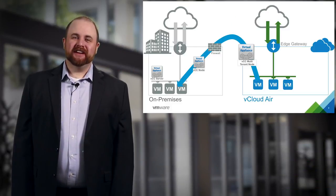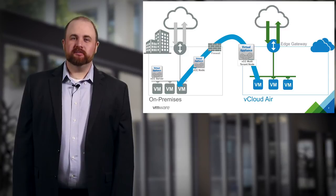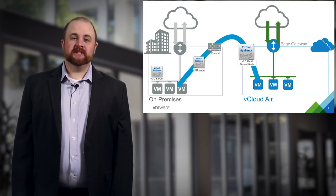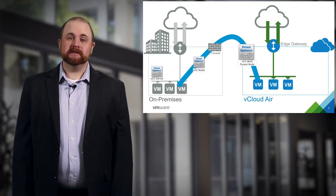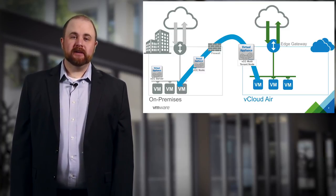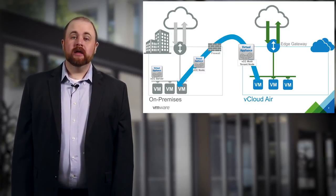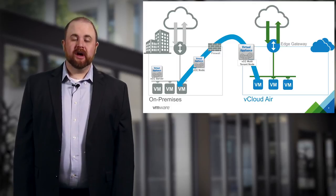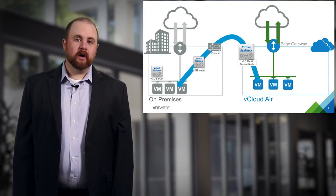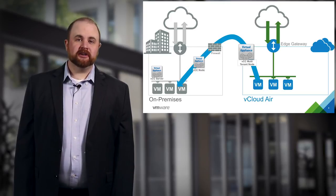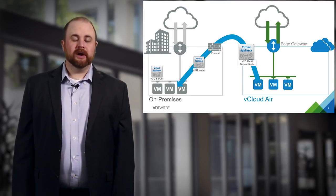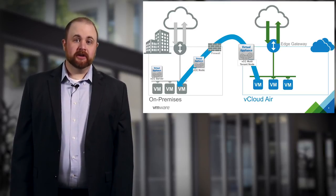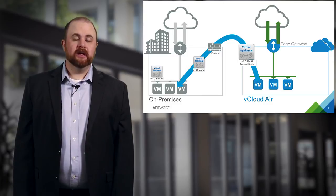With vCloud Connector 2.7, moving workloads back to vCloud Air is easier. The vCloud Connector node performs a pull rather than a push mechanism. This means a public IP address or a one-to-one NAT with a private VCC node is no longer required. The VCC 2.7 node will initiate the connection or push from on-premise first, then to the multi-tenant node, then pull the VM back onto on-premise.